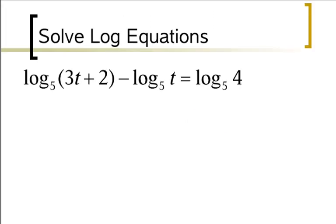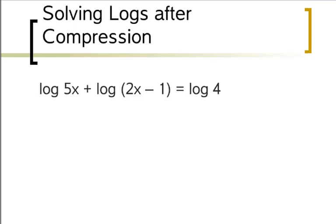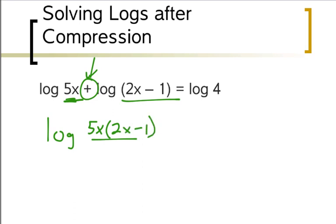Here's another example where I need to compress first. Actually, sorry, that's the same example. Let's take a look at this example, which is actually different. Now I've got a plus sign, so I'm still going to compress the logs. I've got log of 5x plus this 2x minus 1, so I'm going to actually put them together on the same level, which means they're on top of the fraction bar. 5x goes right next to this 2x minus 1, but I need to keep my parentheses, equals log 4.